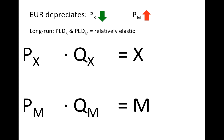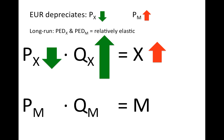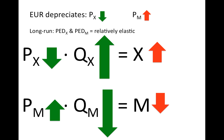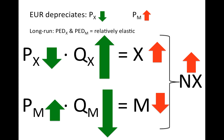In the long run, however, both the PED of exports and imports become relatively elastic. Following the same logic, if exports fall in price and are relatively elastic, the quantity of exports will increase by more, and the value of exports will increase. As for imports, the increase in price will cause the quantity of imports to fall by a lot, so the value of imports will fall. In the long run, when PED of exports and imports are relatively elastic, net exports will increase and the current account will improve.